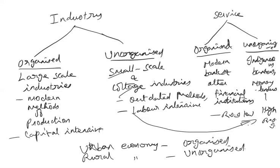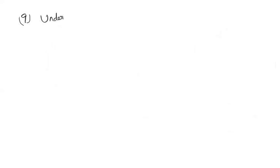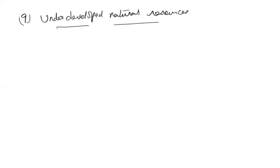Economic dualism leads to social dualism — corruption, riots, protests, and social unrest arise from income disparities between different sections of the population and sectors of the economy. Most underdeveloped countries also suffer from underdeveloped natural resources, due to want of capital, technology, or accessibility to properly utilize them.